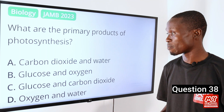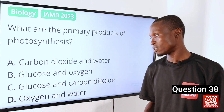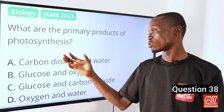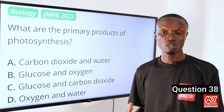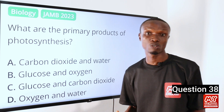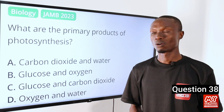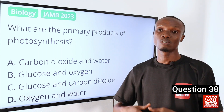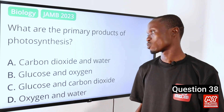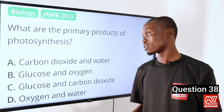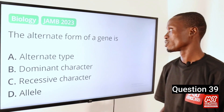Question 38. What are the primary products of photosynthesis? A. Carbon dioxide and water. B. Glucose and oxygen. C. Glucose and carbon dioxide. D. Oxygen and water. The answer is option B, glucose and oxygen. During photosynthesis, plants use sunlight, carbon dioxide and water to produce glucose. Oxygen is also produced as a byproduct which is released into the atmosphere. So option B is the correct option.